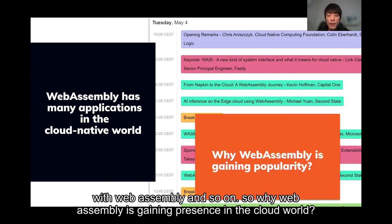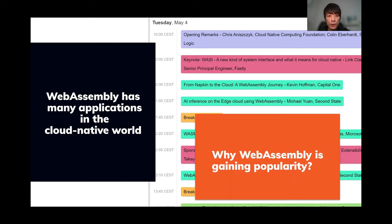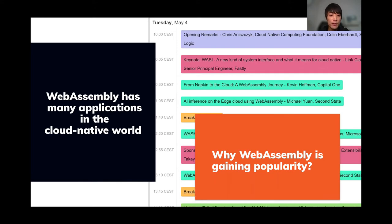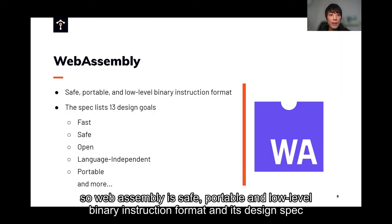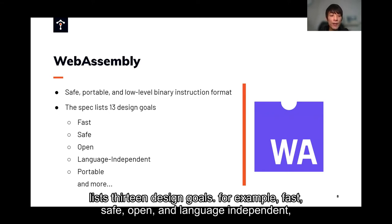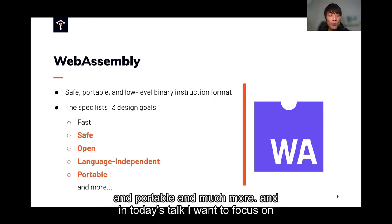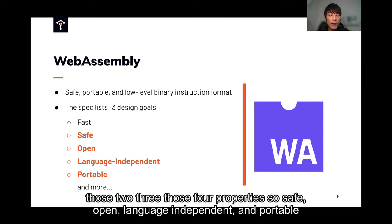So why is WebAssembly gaining presence in the cloud native world? To reflect on that, let's get back to the basic properties of WebAssembly. WebAssembly is a safe, portable, and low-level binary instruction format. Its design spec lists certain design goals — for example, fast, safe, open, language-independent, and portable, and much more. In today's talk, I want to focus on four properties: safe, open, language-independent, and portable.